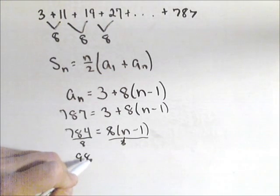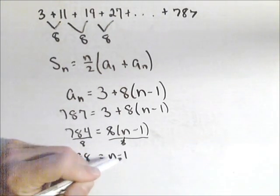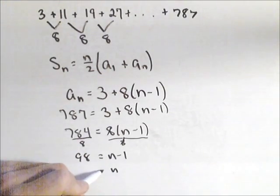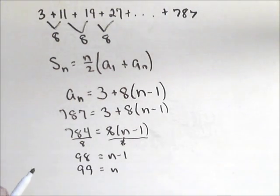And we get 98 equals n minus one. Add one to both sides. We find out that this series has 99 terms.